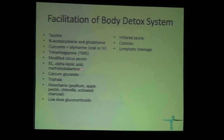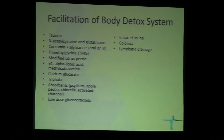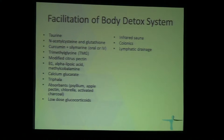We also use high doses of B1, alpha-lipoic acid, and B12. Calcium glucarate is used to stop recycling of microbial toxins. Triphala is a major motility agent we use a lot to move microbial toxins out. In some cases you can use absorbents like psyllium and apple pectin, though I'm not a big proponent because they also absorb antibiotics and bring efficient antibiotic concentrations down considerably. Low-dose glucocorticoids can also be used efficiently. Physical measures include infrared sauna, colonics, and lymphatic drainage.